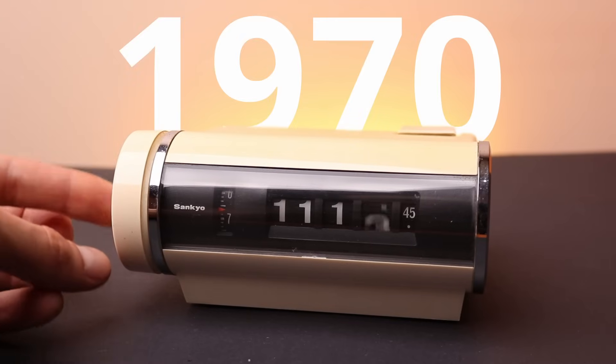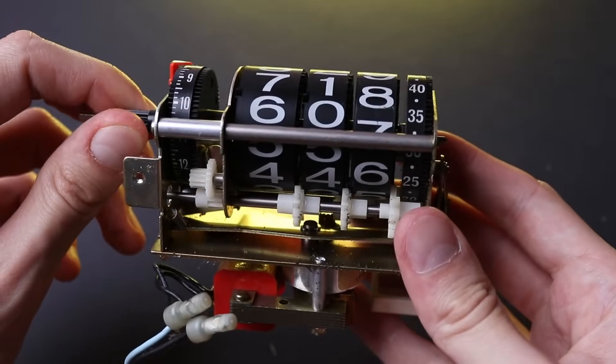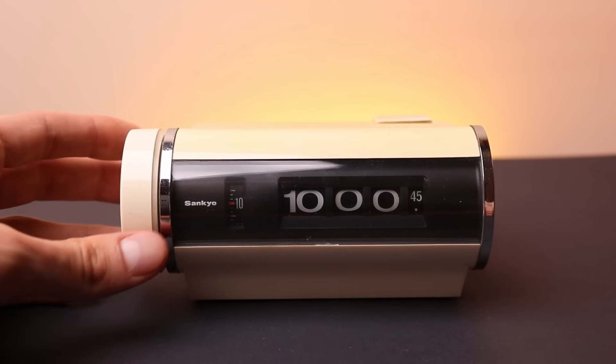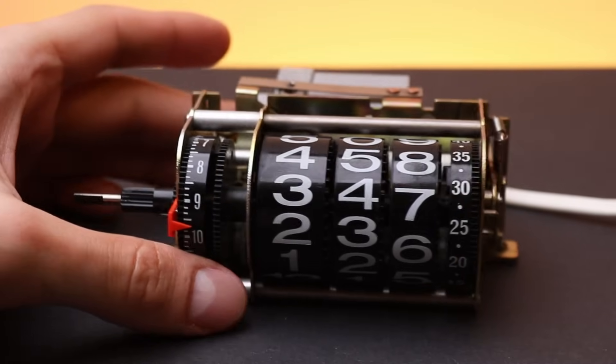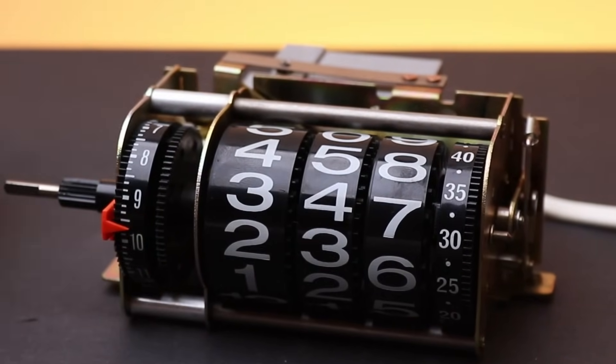This Japanese clock from the 70s is one of the coolest I've ever seen in my life. There are several reasons for that. First of all, it looks amazing. Those flip numbers and round display shape look really unusual and make you love it from the first view.